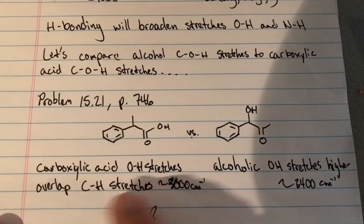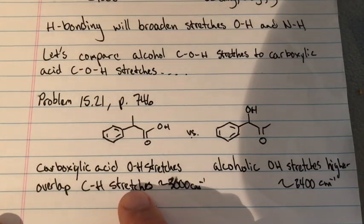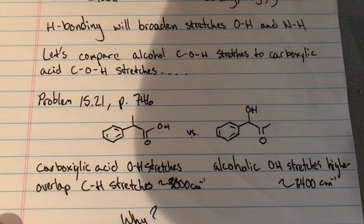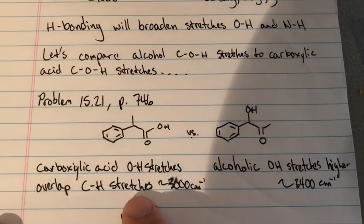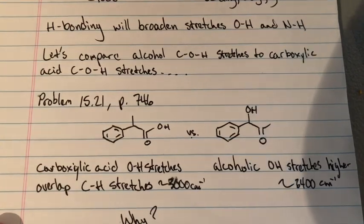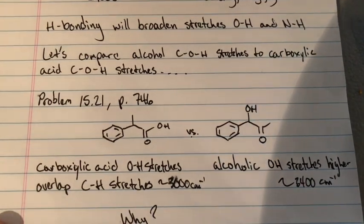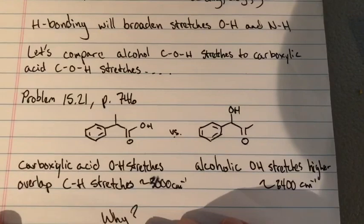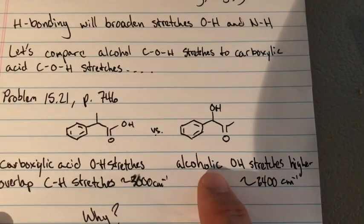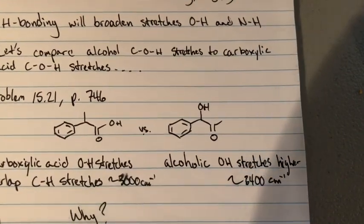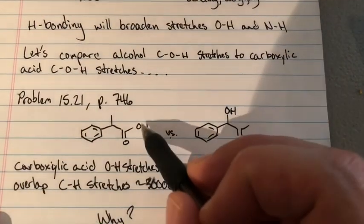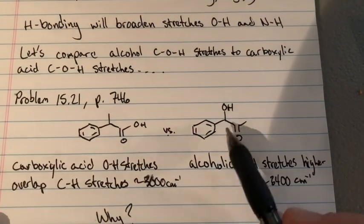With a carboxylic acid, O-H stretches overlap with C-H stretches around 3,000 wave numbers. C-H stretches don't tell you very much — we're dealing with organic chemistry where alkanes and alkenes are commonplace, so it's not much to learn from that region around 3,000. The electronegative groups give you more information. Alcoholic O-H stretches are going to be higher in energy, somewhere around 3,400 to 3,600 wave numbers — so carboxylic acid O-H overlaps with 3,000 while alcoholic O-H shows up at 3,400.